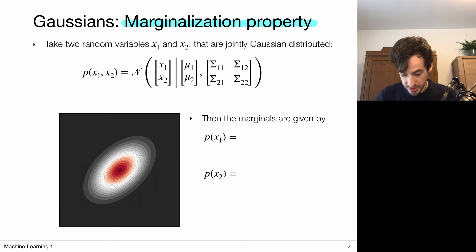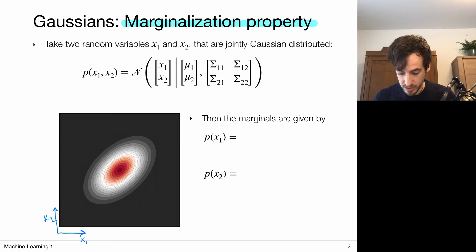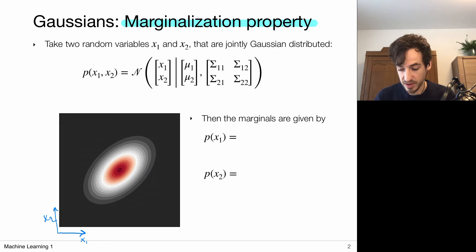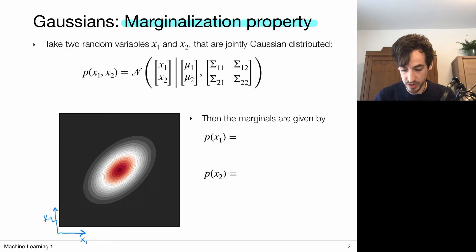If I plot this probability density for x1 and x2, I see that some combinations of x1 and x2 are more likely to be sampled. In general these random variables can be vectors themselves, giving a single covariance matrix. For visualization purposes we focus on scalar random variables, so x1 is just a scalar and sigma11 is also a scalar number. The idea of the marginalization property is that if I am interested in the distribution for only the first random variable, I can obtain it by integrating out x2 from the joint distribution — that's the marginalization process.